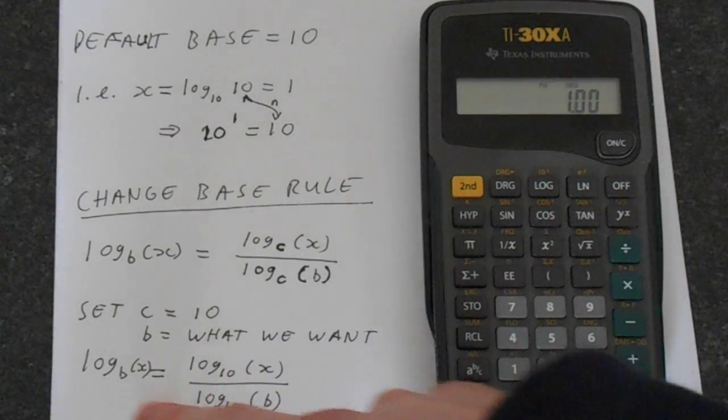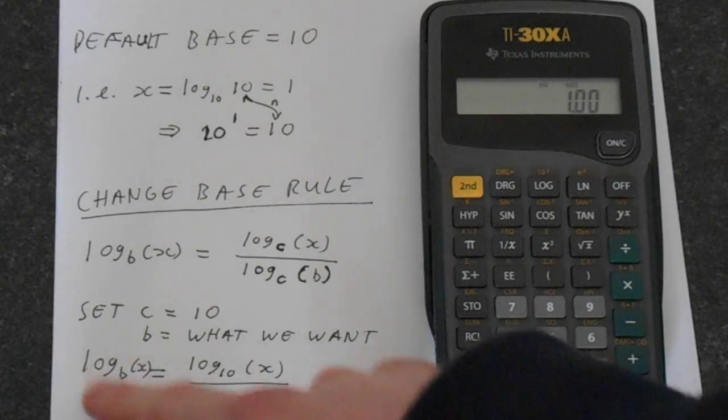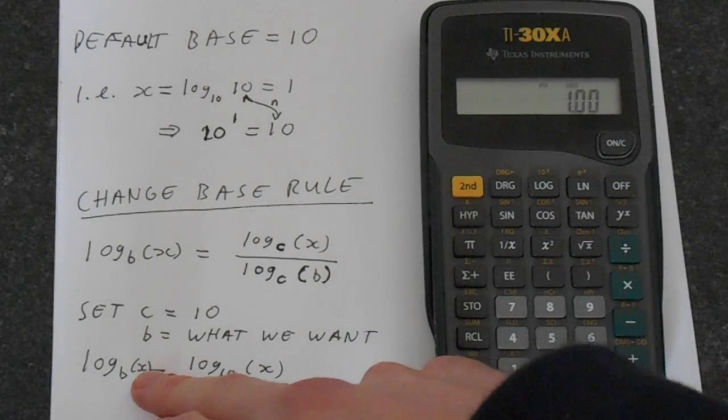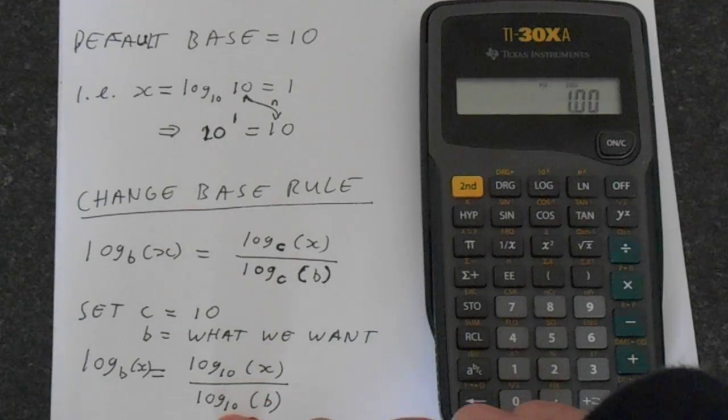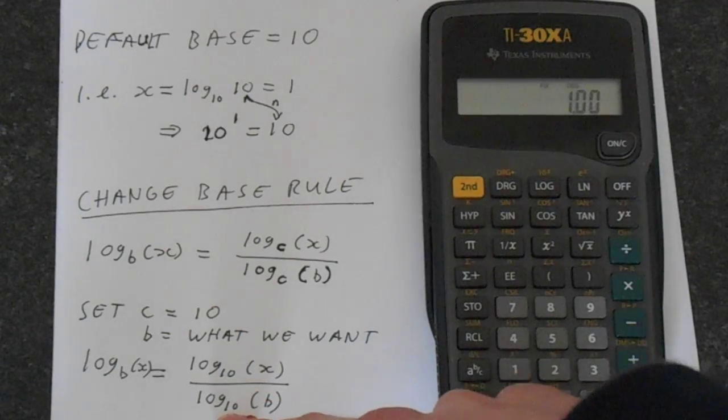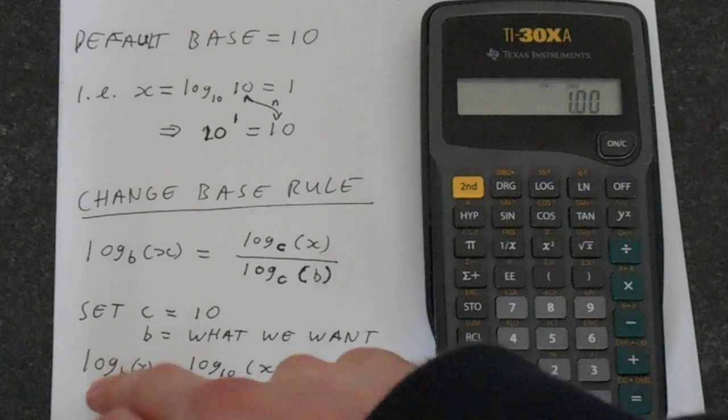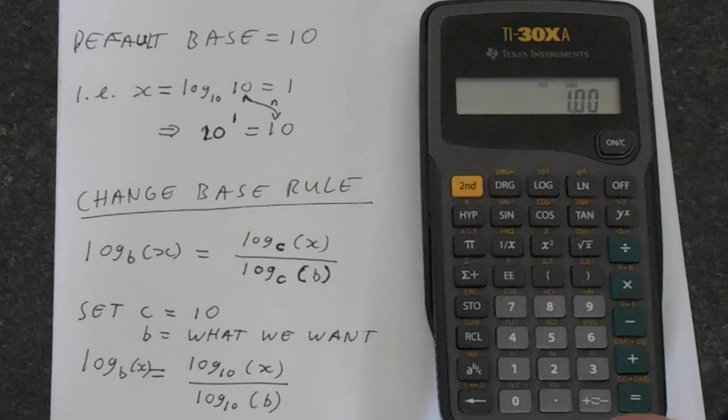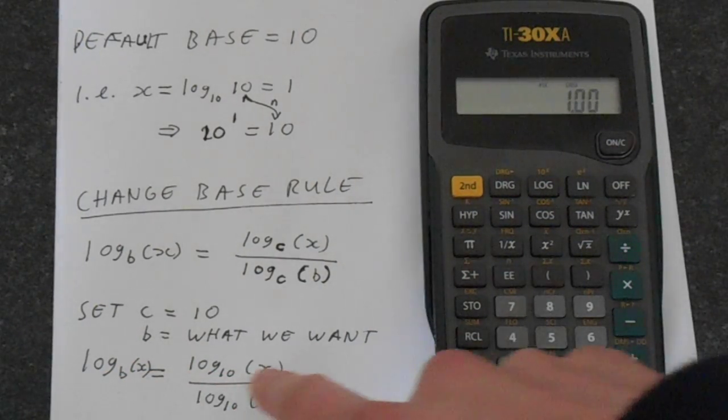So what this is basically saying is that log b of x is equal to log 10 of x over log 10 of b. The calculator works by default in log 10, so we can do log of any base purely in terms of log 10. That's quite important.